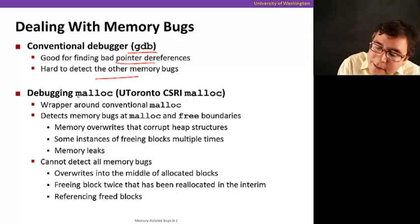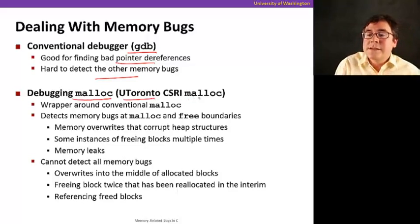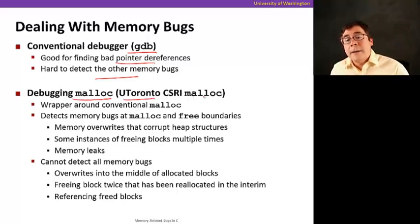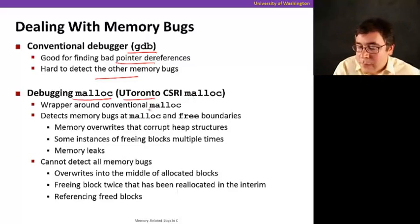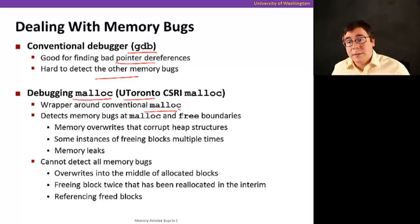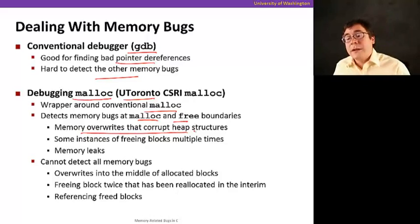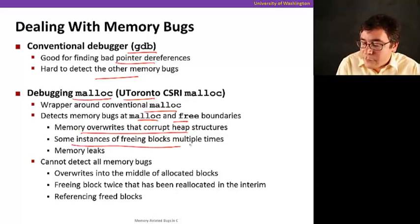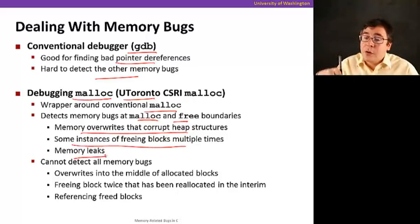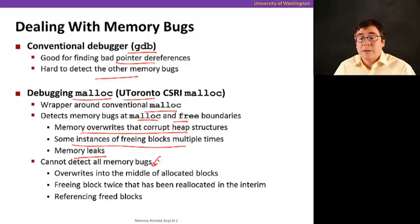So there is a special version of malloc. For example, the University of Toronto's CSRI malloc. It has special features. It's a wrapper around the typical malloc. And it detects several memory bugs. So at the boundaries of mallocs and frees. So it detects things like memory overwrites that corrupt heap structures. It detects some instances of freeing blocks multiple times. It detects memory leaks. You know that if you malloc and you don't free, it might alert you and so on. But it cannot detect all memory bugs.